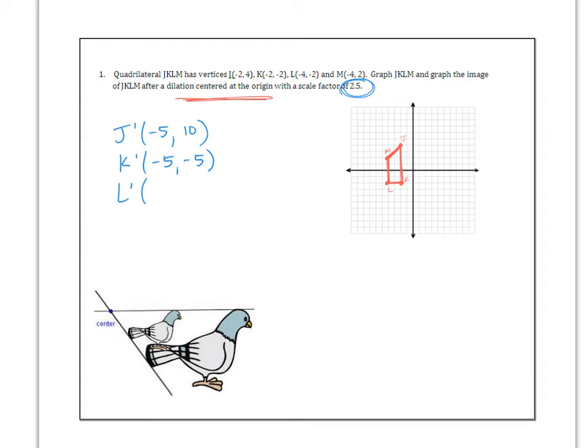L prime, -4 times 2.5 is -10. And -2 times 2.5 is -5. You want to keep the negatives with them. And for M prime, we should get -10, positive 5.